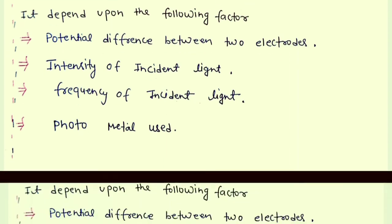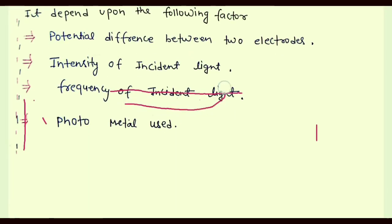To understand the variation of intensity, we will have to understand the meaning of intensity of light. Generally, when you increase the intensity of light, you are increasing the number of photons per second. And obviously, if number of photons increases, the ejection of electrons will increase, resulting in increase of current.